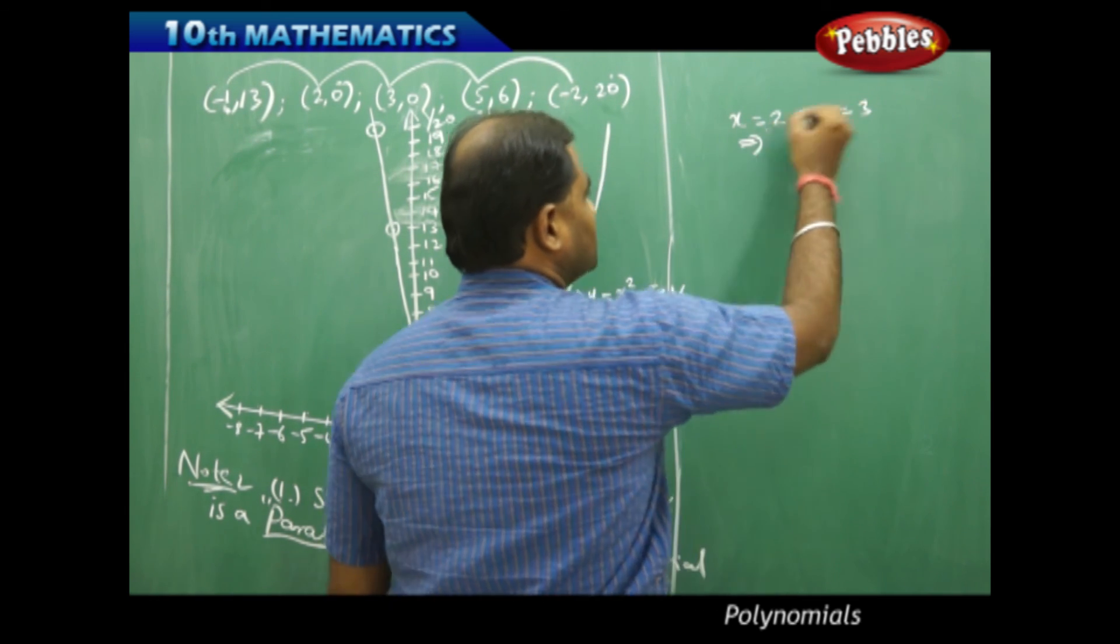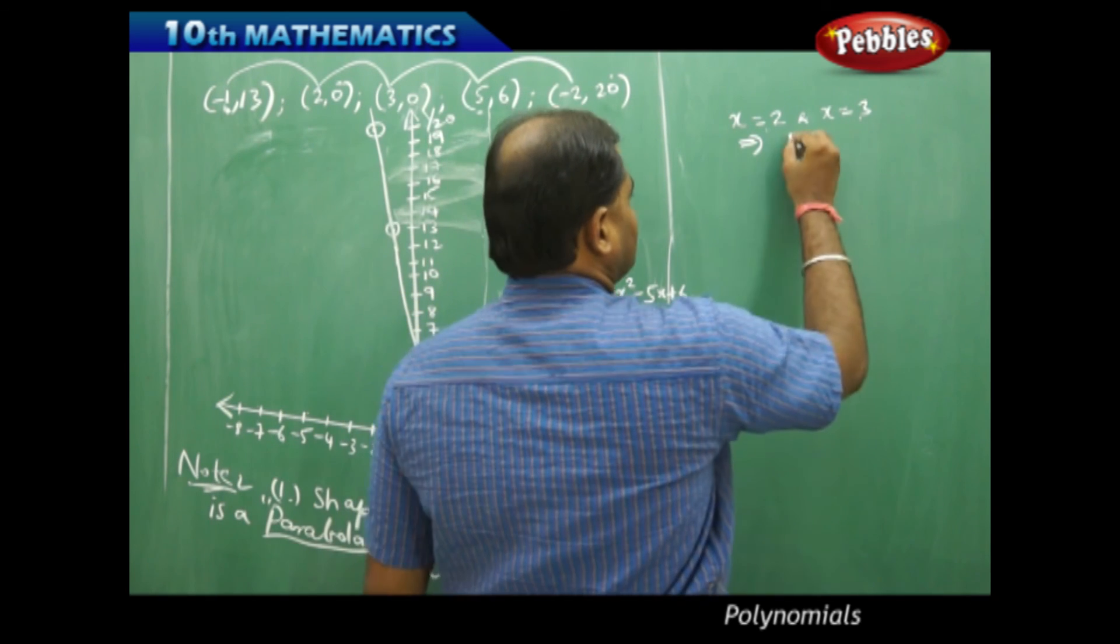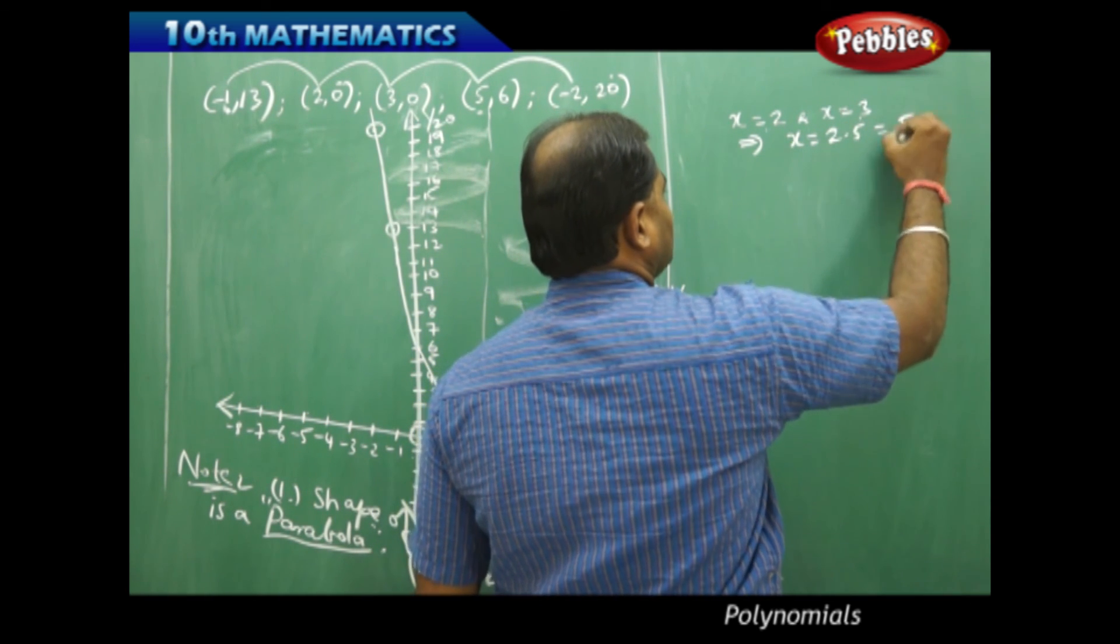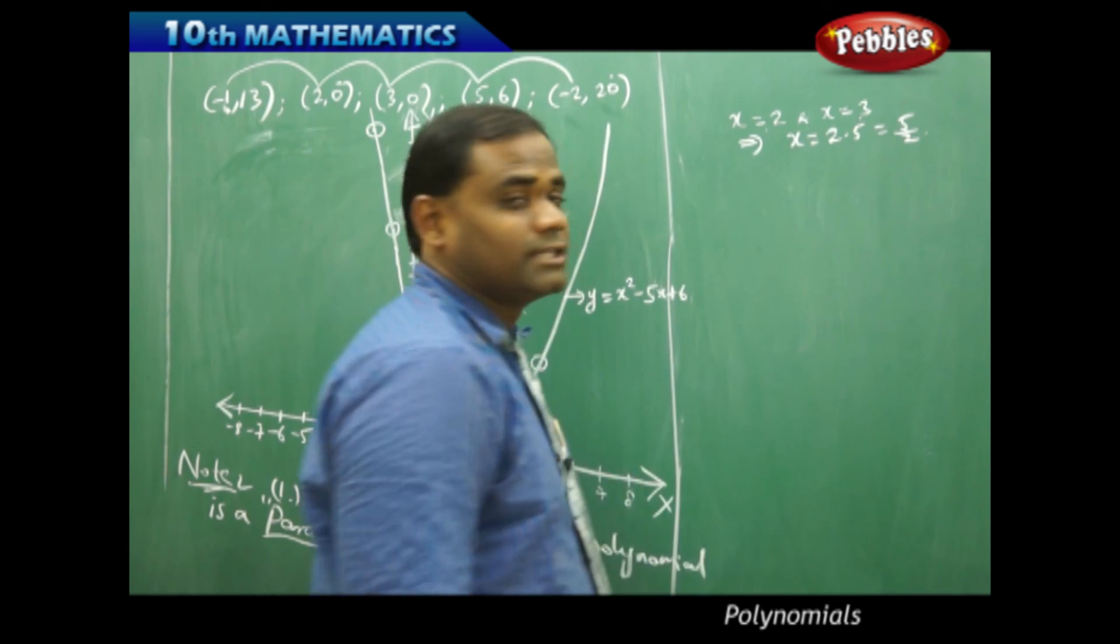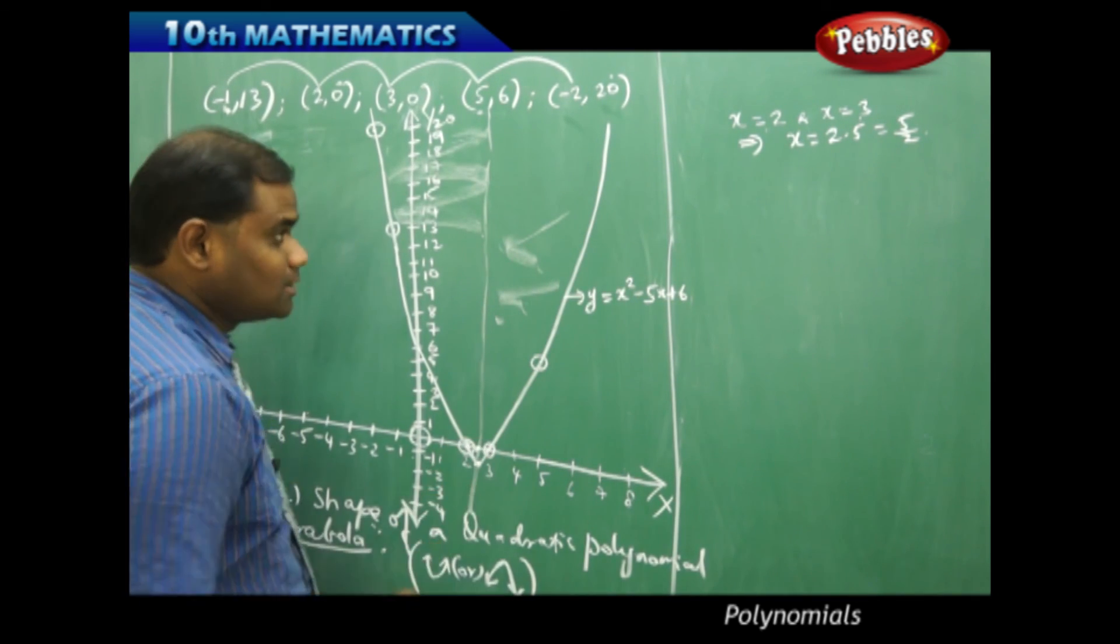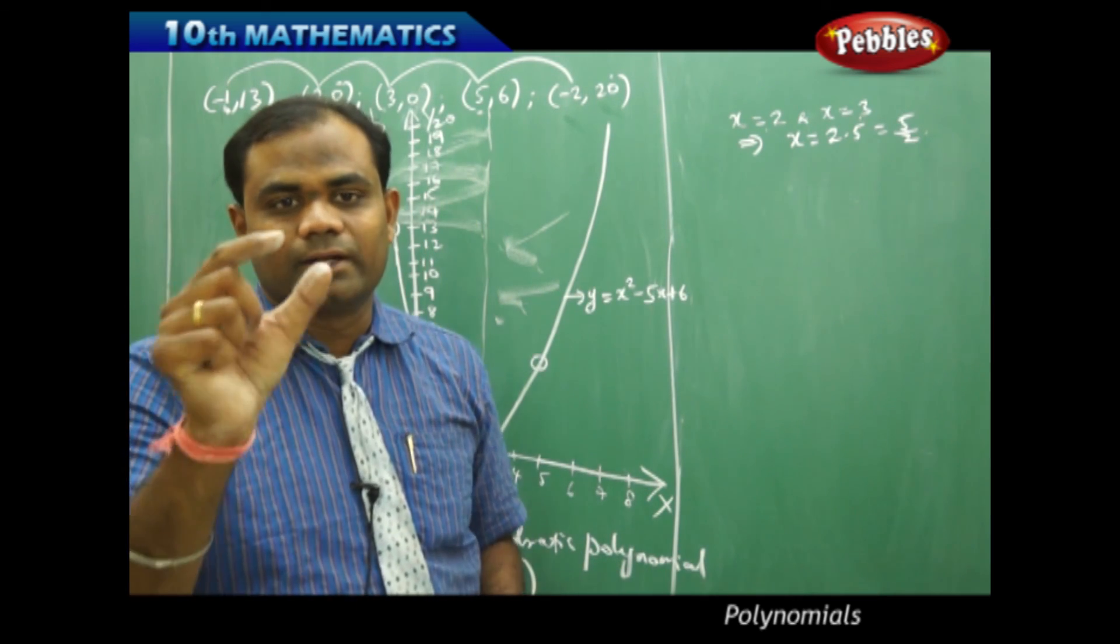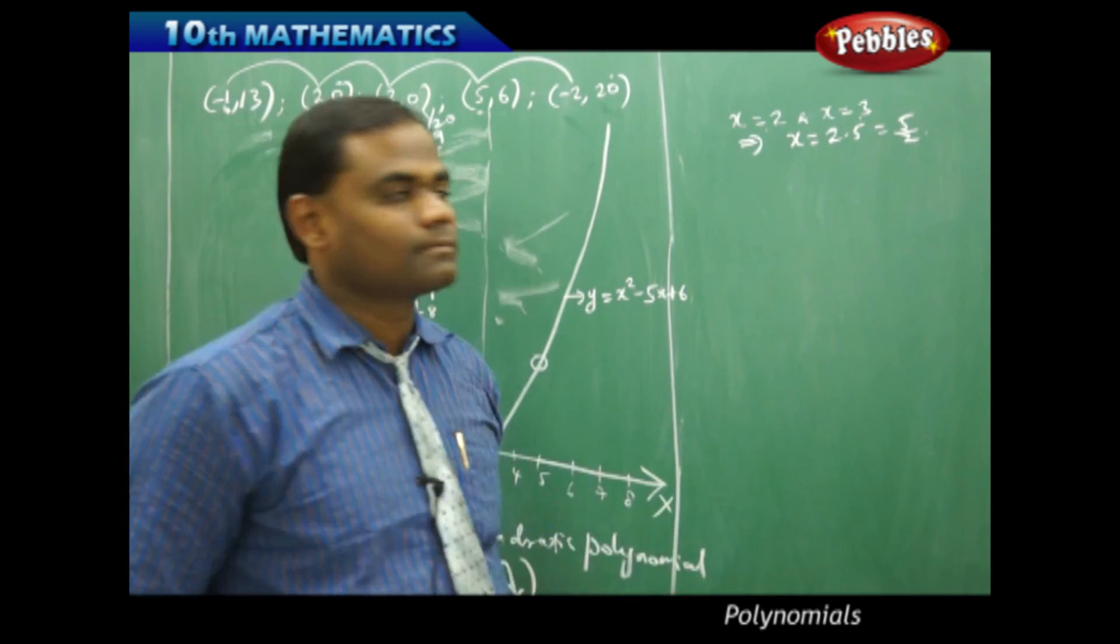I got the x-intercepts as x equal to 2 and x equal to 3. Then, I take the middle value of these two x-intercepts which is 2.5. That implies x is 2.5 or 5 by 2 is the middle value which exactly lies between 2 and 3. So, at this x equal to 5 by 2, I would find the y and that coordinate will be the point where the parabola turns.